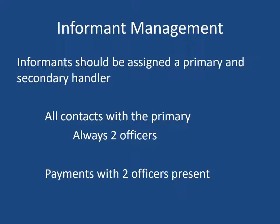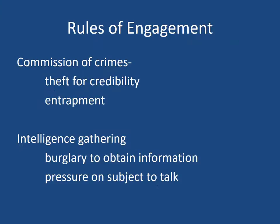Informants should be assigned a primary and secondary handler. They should have all contacts with the primary, but the secondary is there in case something should happen to the primary — the secondary can take over. Also, any contacts should always have two officers present. Any payments should be with two officers present to note that the informant was paid. You know, if they were given five hundred dollars, you have two people to back that up — the problem with ethical issues is an officer taking five hundred dollars to pay an informant, paying him a hundred dollars and keeping the rest, or spreading payments out. This could get into some ethical issues.